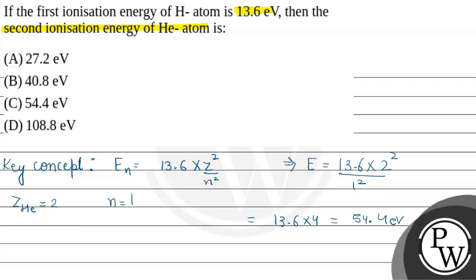We just have to put the value of Z and N in the formula and we get the answer. N is 1 because helium's electronic configuration is 1s², meaning only the first orbit is filled. We are removing that electron from the first orbit only. That is why the answer is 54.4 electron volt. I hope students understood it well.